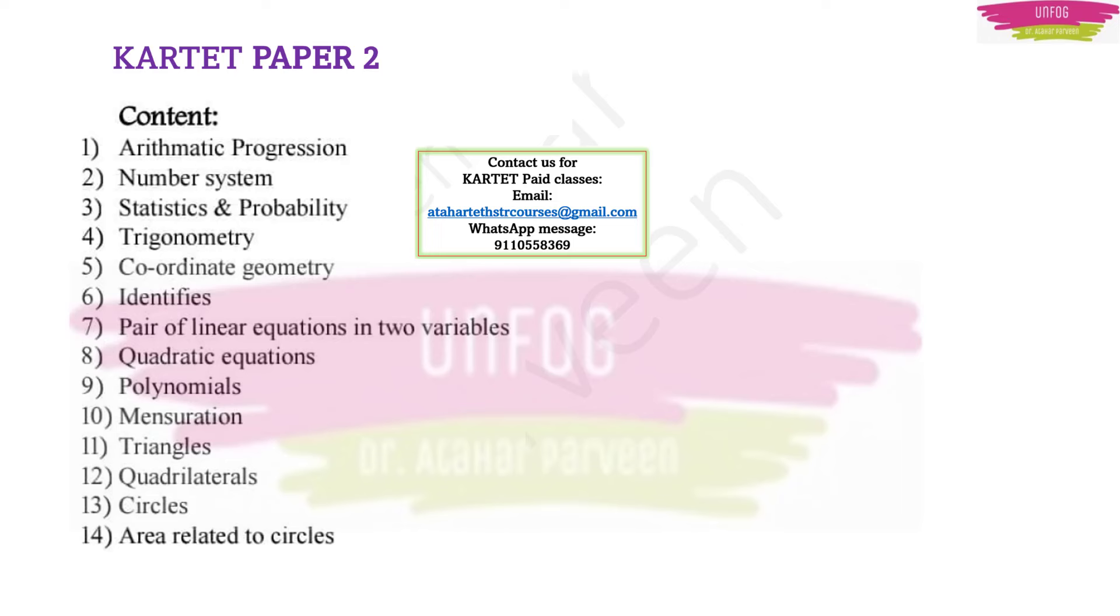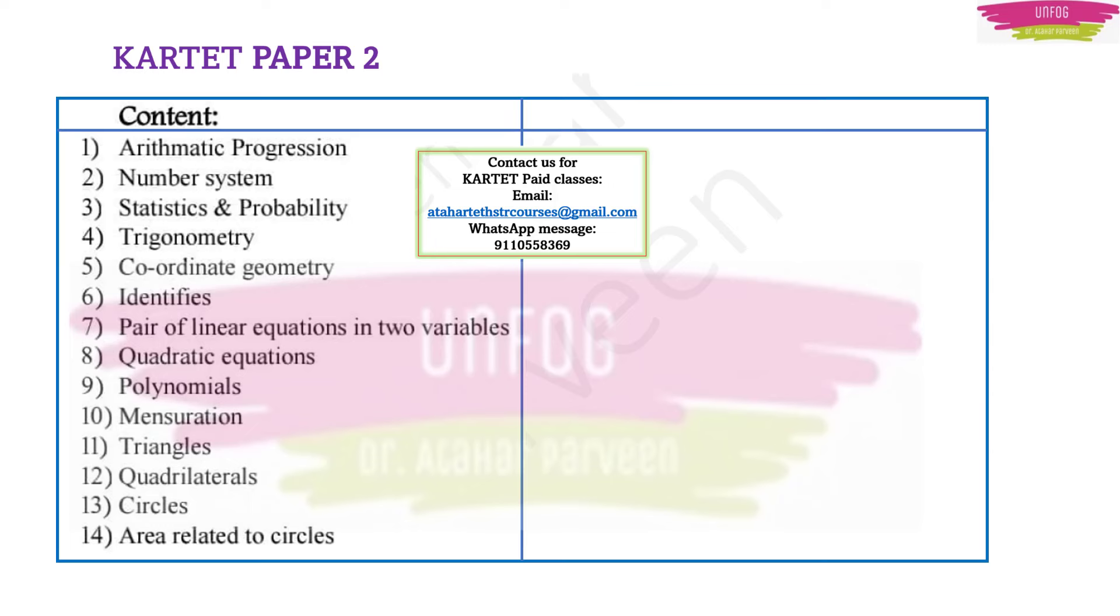I have already told about the expected blueprint for Karnataka TET mathematics. From arithmetic progression we can expect 1 to 2 questions, from number system 1 to 4 questions, from statistics and probability 2 questions, from trigonometry 1 to 2 questions, from coordinate geometry 1 to 2 questions, from identities 0 to 1 question, and from pair of linear equations 1 question, quadratic equations 1 question, polynomials 1 question.